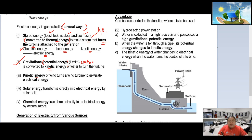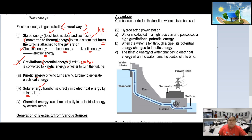The turbine turning produces kinetic energy, which generates electricity. For wind energy, the kinetic energy of the wind turns the wind turbine to generate electricity. For solar energy, it is transformed directly into electrical energy by a solar cell — just receiving sunlight and converting it.